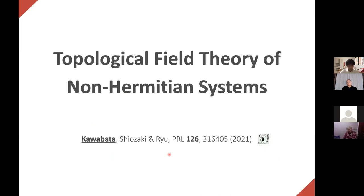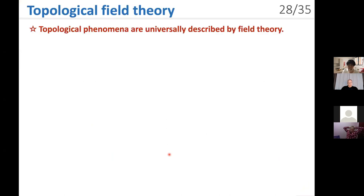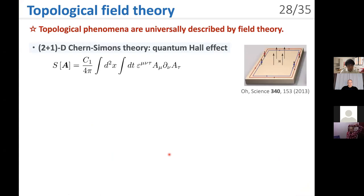So far, we have discussed non-Hermitian topological phases on the basis of band theory. In the final part of this talk, we discuss topological field theory of non-Hermitian systems. For Hermitian systems, topological phenomena are universally described by field theory. As a prime example, the 2+1 dimensional Chern-Simons theory describes the quantum Hall effect, where C₁ denotes the Chern number and A denotes the gauge potential.